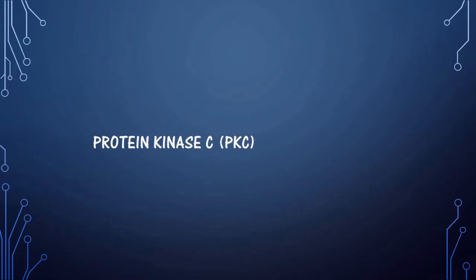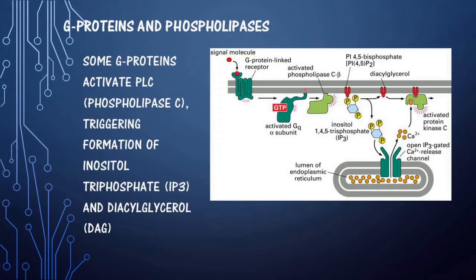Next is protein kinase C. Some G proteins activate phospholipase C. The second case is the activation of phospholipase C, triggering the formation of inositol triphosphate (IP3) and diacylglycerol from phosphatidylinositol bisphosphate. Inositol triphosphate acts on the calcium release channels of the endoplasmic reticulum and helps in the release of calcium.